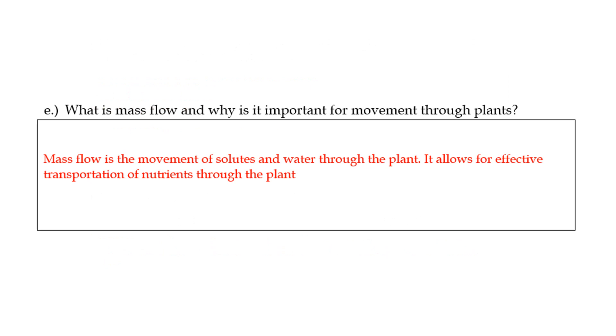The last question was what is mass flow and why is it important for the movement of water? Why is it important for movement through plants? Mass flow is basically the movement of solutes and water through the plant and obviously it is important because it allows the solutes and the water to move as one body. So you don't get the solutes concentrating into a specific space where they are not able to move because think of the solutes like your sap for example.